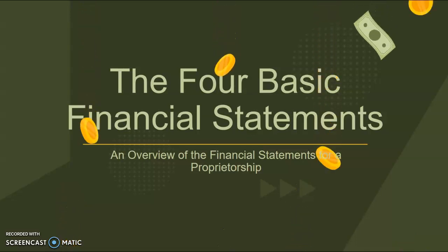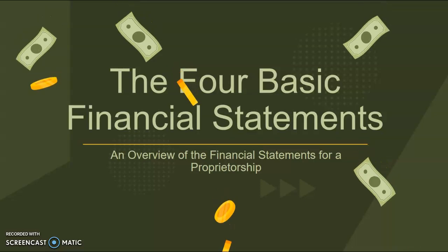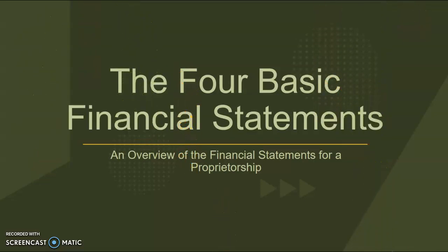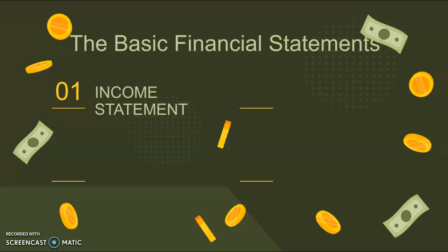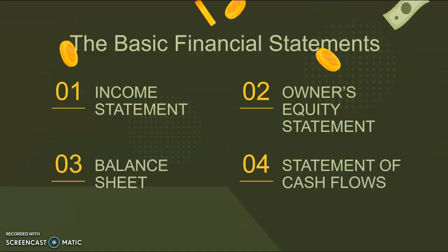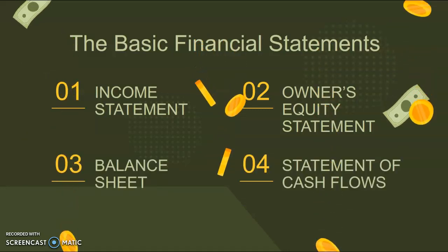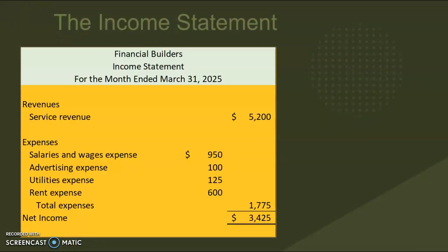Hi students, I wanted to review with you the four basic financial statements that you'll find in a proprietorship. Our first statement that we prepare is the income statement, next is the owner's equity statement, then the balance sheet, and lastly the statement of cash flows. So let's first look at the income statement.